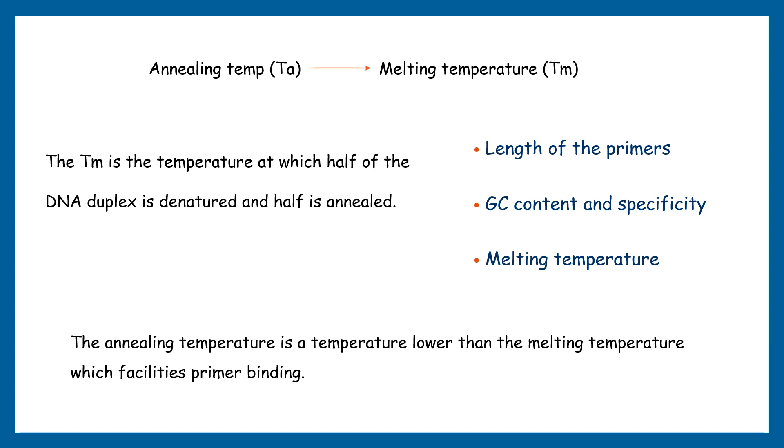Annealing temperature depends on the length of the primers, GC content and specificity, and of course on the melting temperature. The annealing temperature is a temperature lower than the melting temperature which facilitates primer binding.